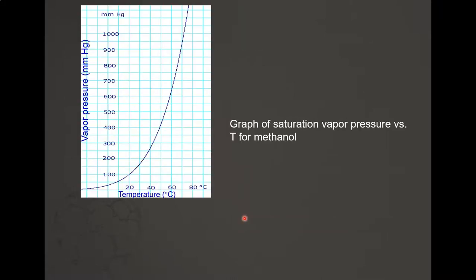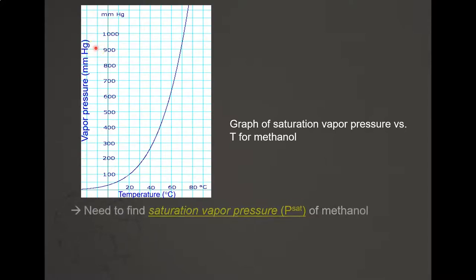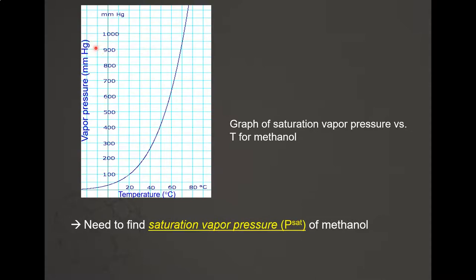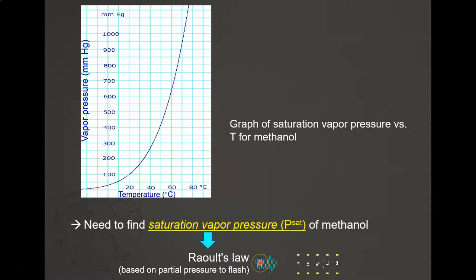For methanol, we use the saturation vapor pressure graph — a plot of saturation vapor pressure versus temperature. To find the flashpoint temperature of the methanol mixture, we need to determine the vapor pressure using Raoult's law: the partial pressure equals mole fraction times saturation pressure (P = y · P_sat).